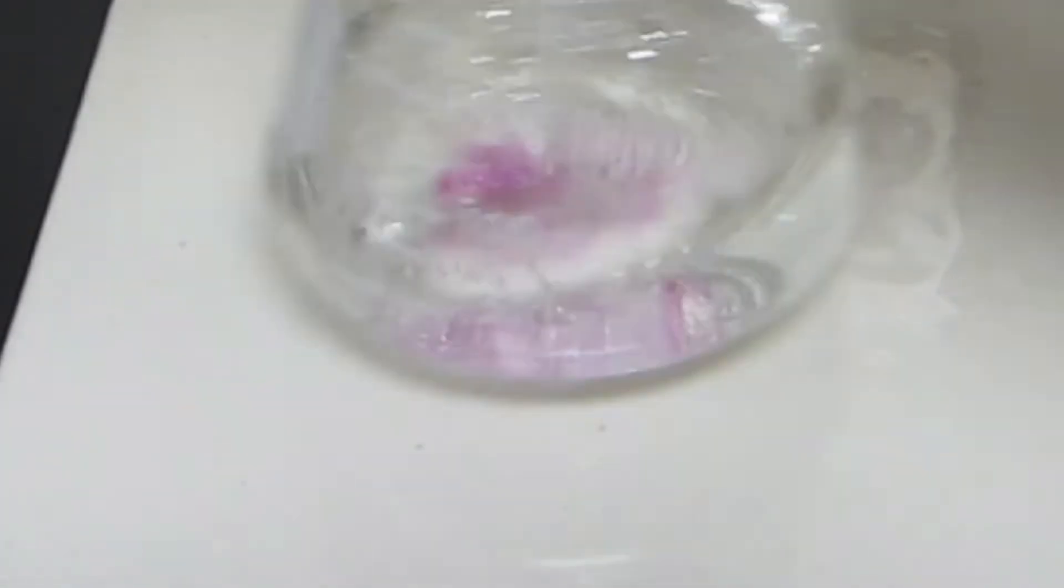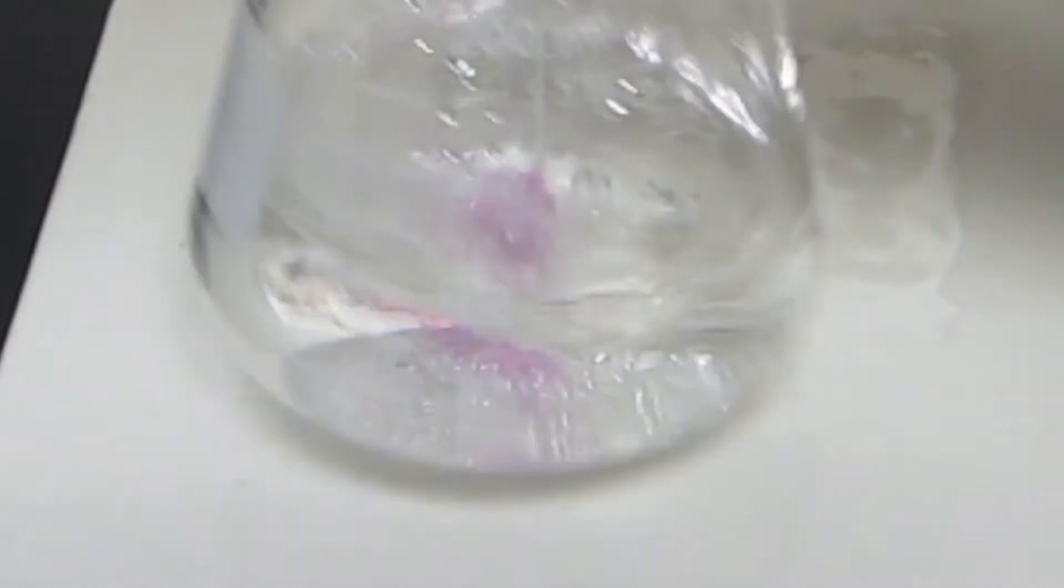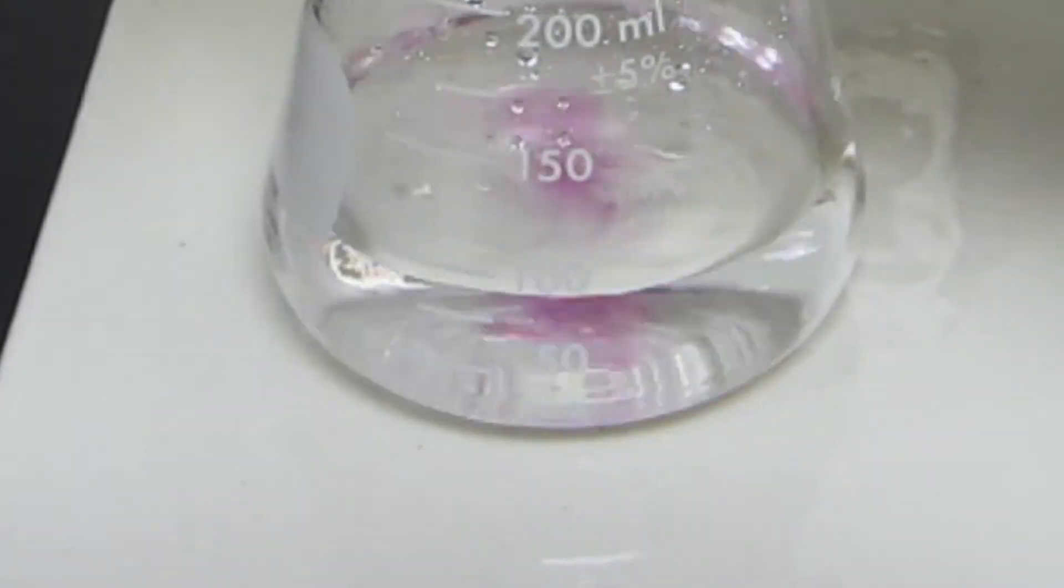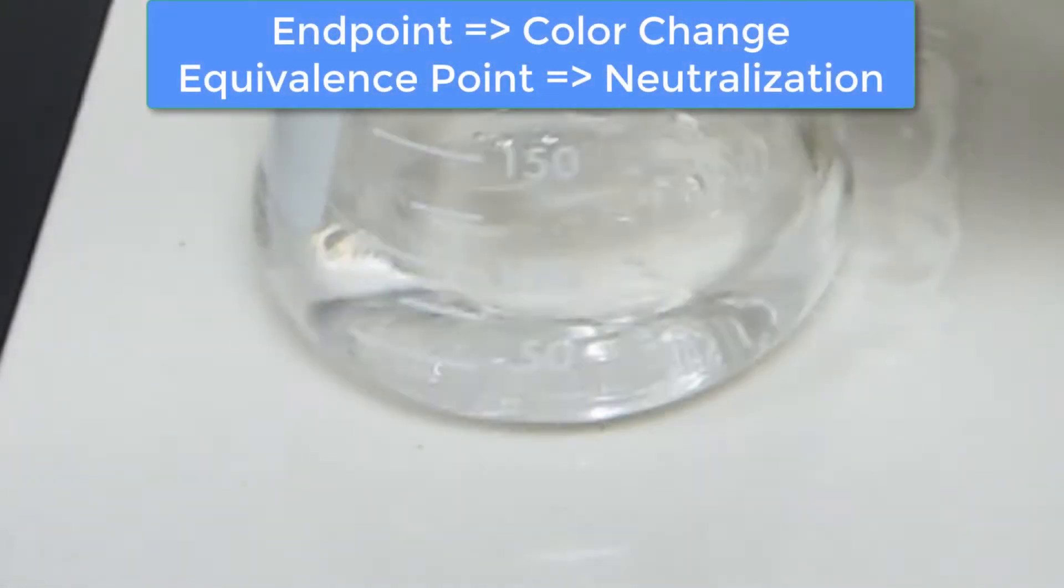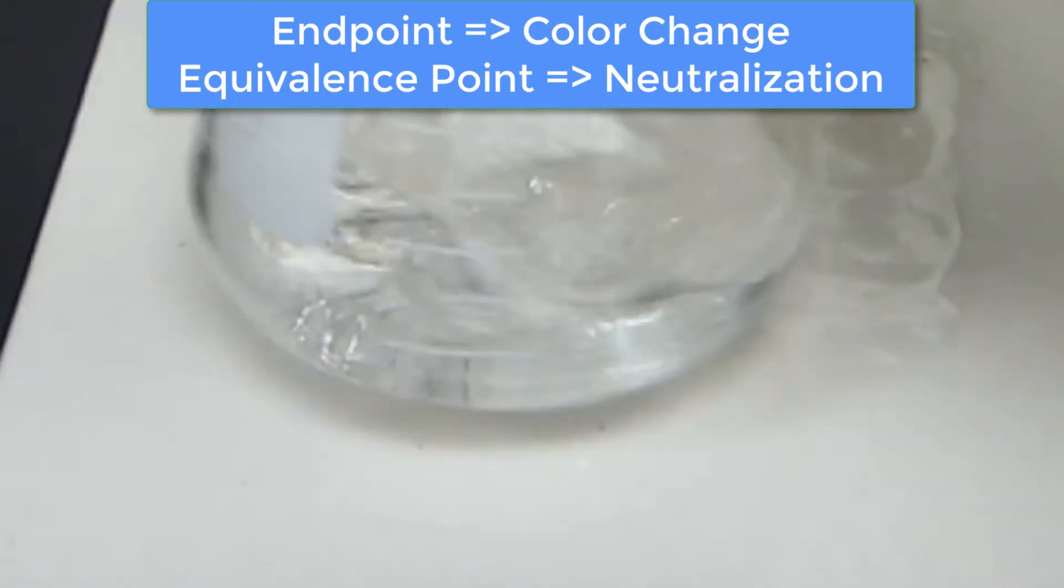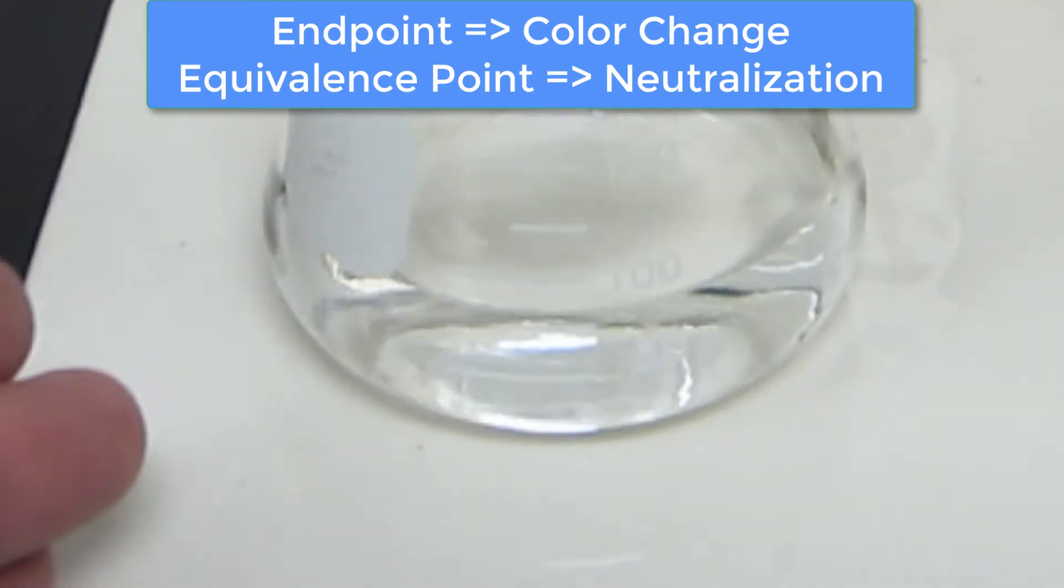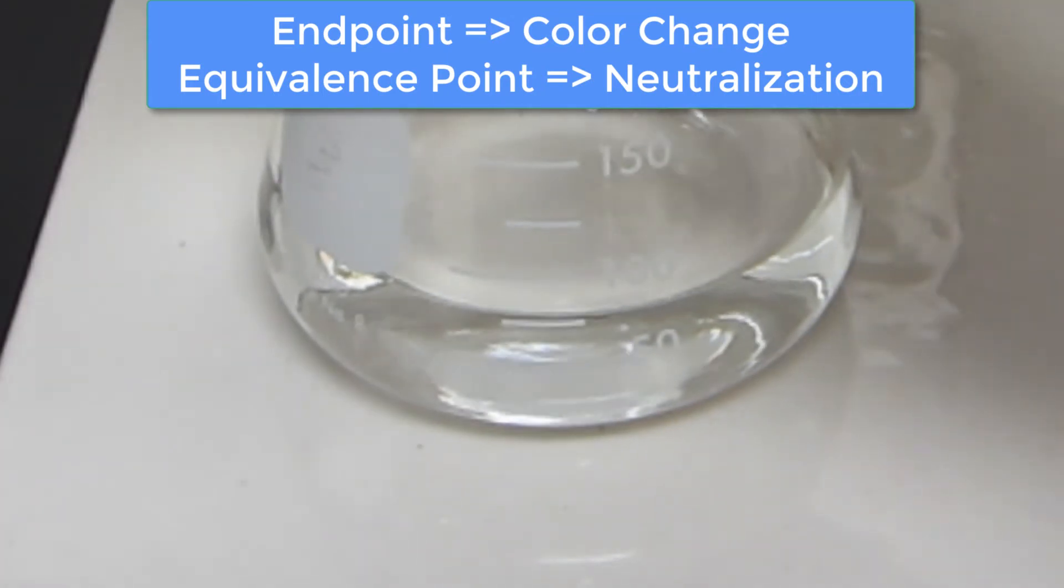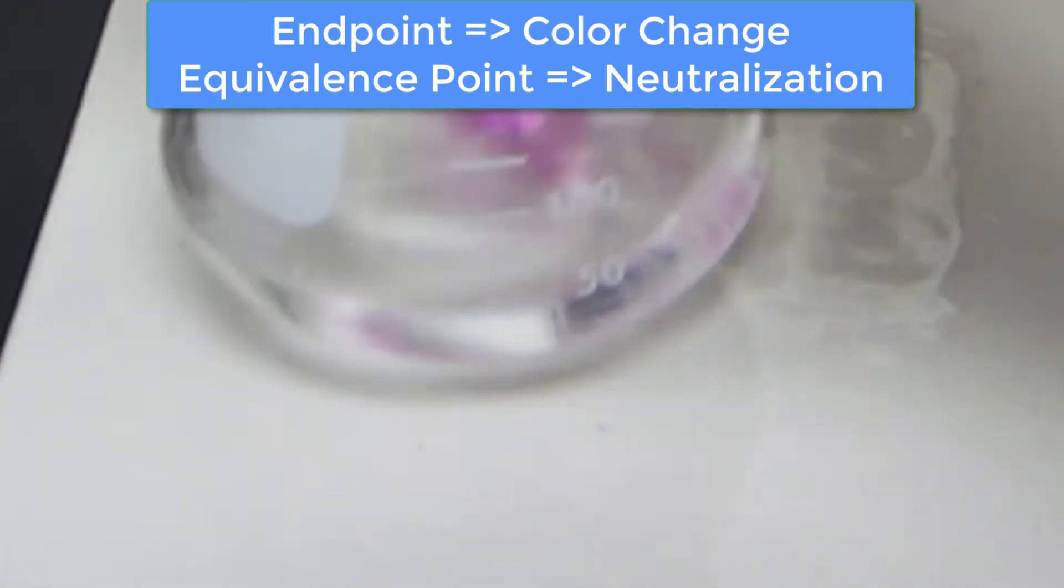Now as we get closer to the endpoint, that is, the point at which the purple color is going to persist, that is going to indicate that we are close to the neutralization point, which in the terms of titration is referred to as the equivalence point. The endpoint is where the color change occurs and the equivalence point is where the reaction is actually complete. Basically the two are going to correspond at about the same moment here, and that's what we're going to work with in our calculations.